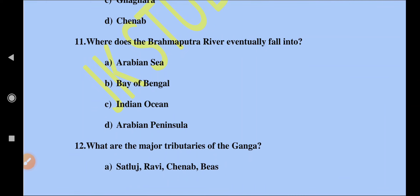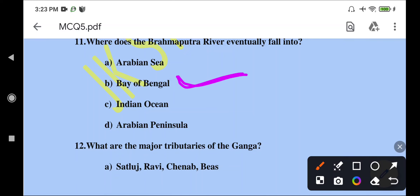Where does the Brahmaputra River eventually fall into? We have four options: Arabian Sea, Bay of Bengal, Indian Ocean, Arabian Peninsula. The Brahmaputra goes into the Bay of Bengal. Similarly, the Ganga also goes into the Bay of Bengal. The Brahmaputra originates in Tibet and finally flows into the Bay of Bengal through Bangladesh.